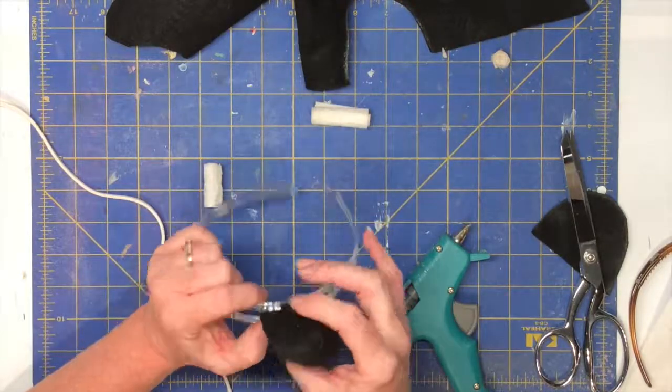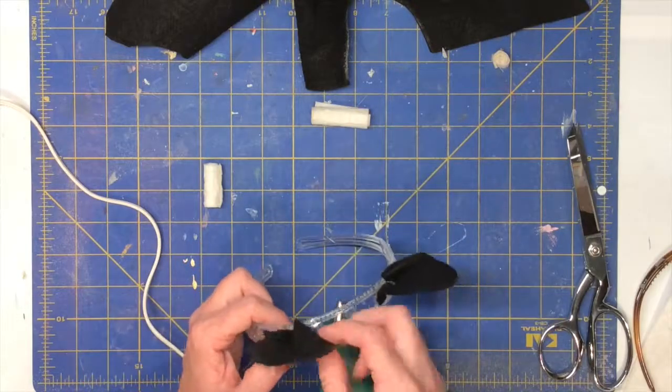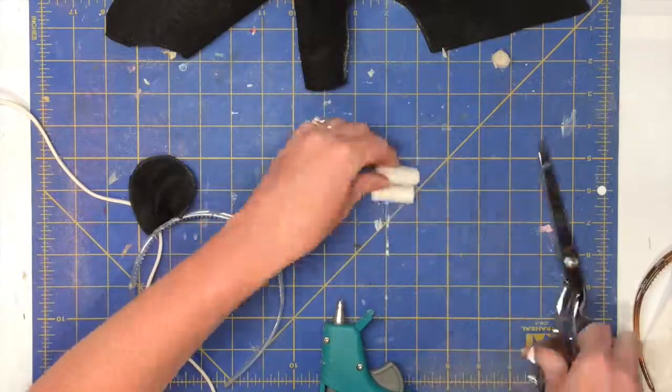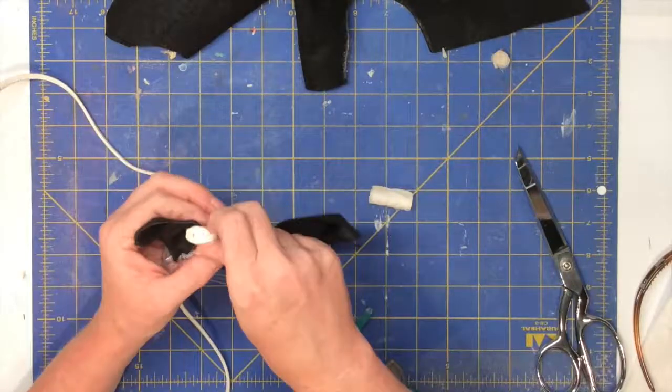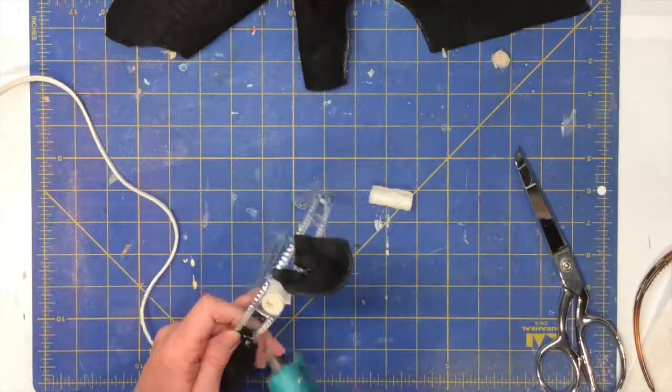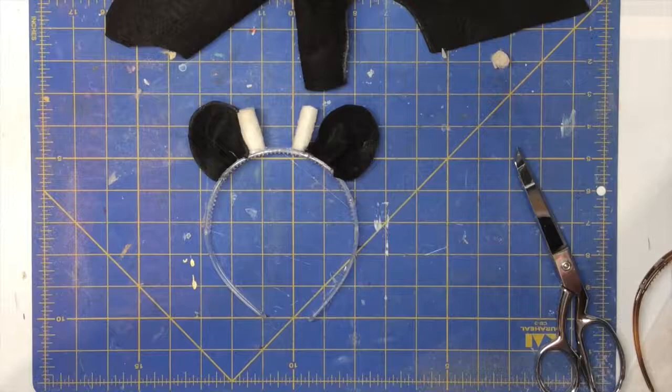As I glue my ears on, I'm kind of pleating them, folding them in the middle so they're not as big at the bottom as they are at the top. Gives them a little bit more shape and dimension as ears. Trimming off my horns and hot gluing those to my headband as well. And I think that the headband looks adorable.